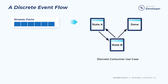A discrete event flow drives state changes within the consumer application state machine and results in either their completion or the abandonment of the consumer's workflow. For example, an order is eventually shipped, a trade is eventually booked, and a taxi cab rider eventually makes it to their destination. Discrete event flows are composed not only of the input event streams but also the state machine logic of the consumer that processes and completes the workflow.